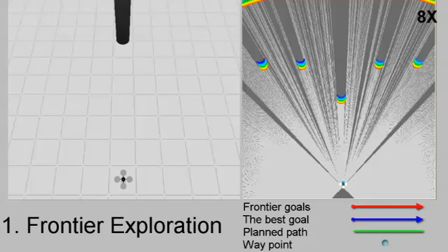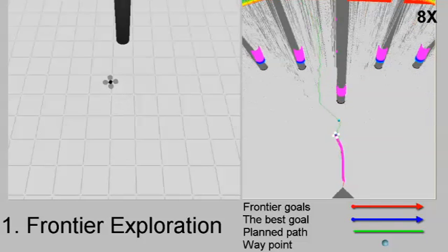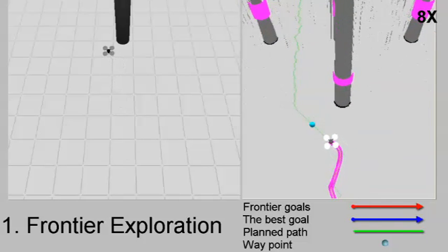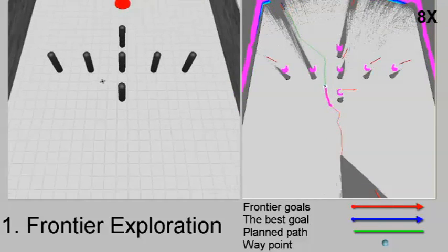The mission starts in exploration mode. Exploration is based on the frontier exploration algorithm. Potential points to explore are shown by red arrows. The blue arrow identifies the best point and is chosen as the next desired goal.